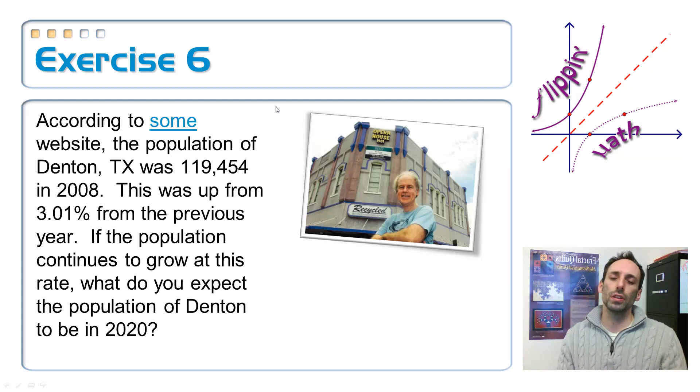According to some website, population of Denton in 2008 was right there, 119,454. This was up 3.01% from the previous year. If we assume that the population continues to grow at that percent every single year, I want to know what's the population of Denton going to be in 2020. Speaking of 2020, how many years is that from 2008? So we've got 2020, we're subtracting 2008, and we have 12 years. This is going to be the T value.